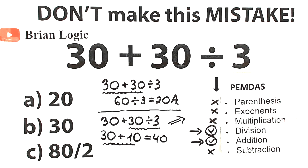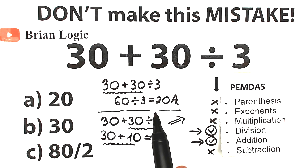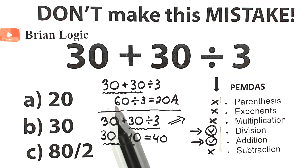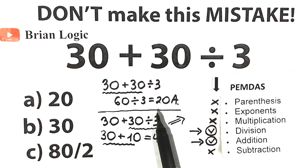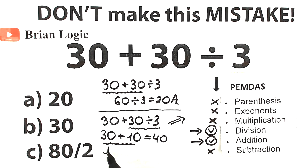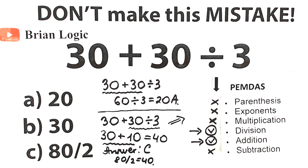But if we look at the correct option — we have 20, 30, and 80 over 2. Sometimes students don't see the correct answer here; they don't see 40, so they go back to 20, which they think is correct because they solved it from left to right without caring about order of operations. But 80 over 2 is a very tricky value — because 80 over 2 equals 40. So our correct answer is Option C.